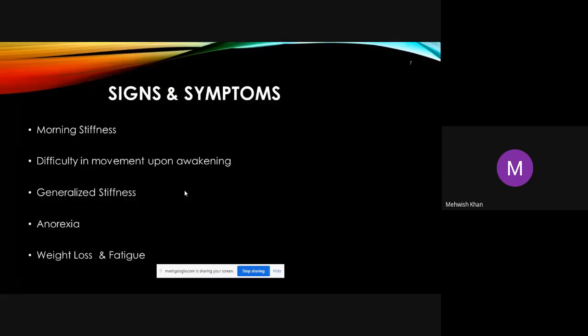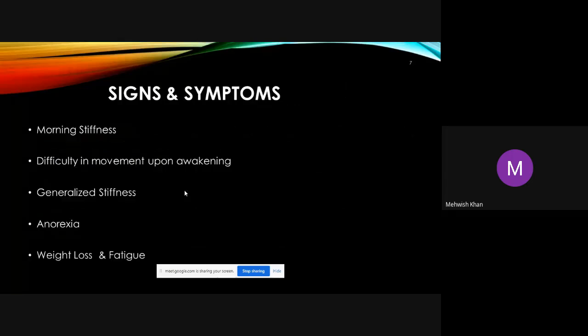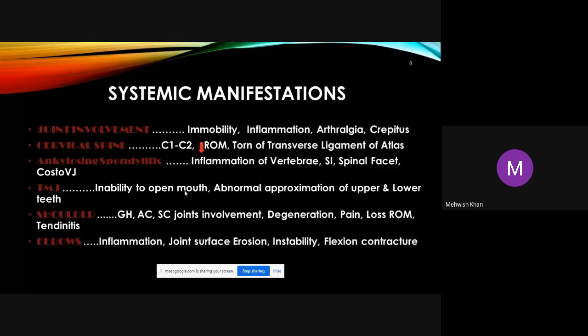Signs and symptoms of RA include morning stiffness, difficulty moving upon awakening, joint stiffness, anorexia, weight loss, and fatigue. Because RA is a systemic disease, it involves systems throughout the body beyond just the joints.